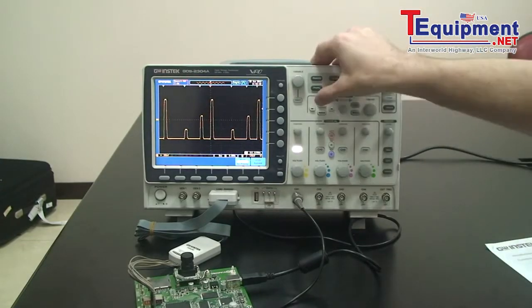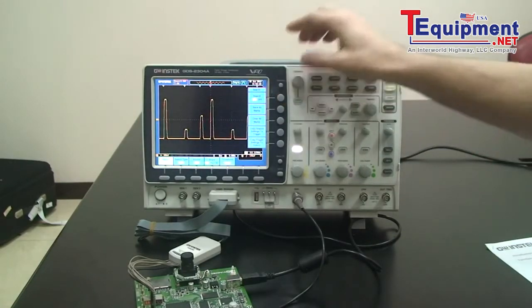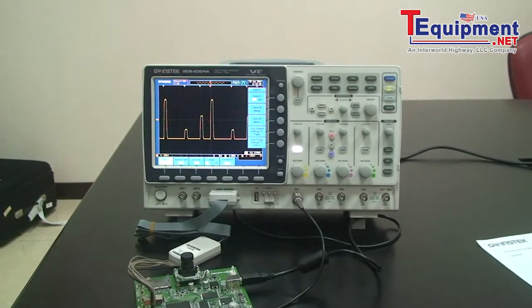To use the search function, just press the search key and turn search on. The search conditions are fundamentally the same as the trigger conditions. However, the search function uses the measurement threshold levels rather than the trigger level.